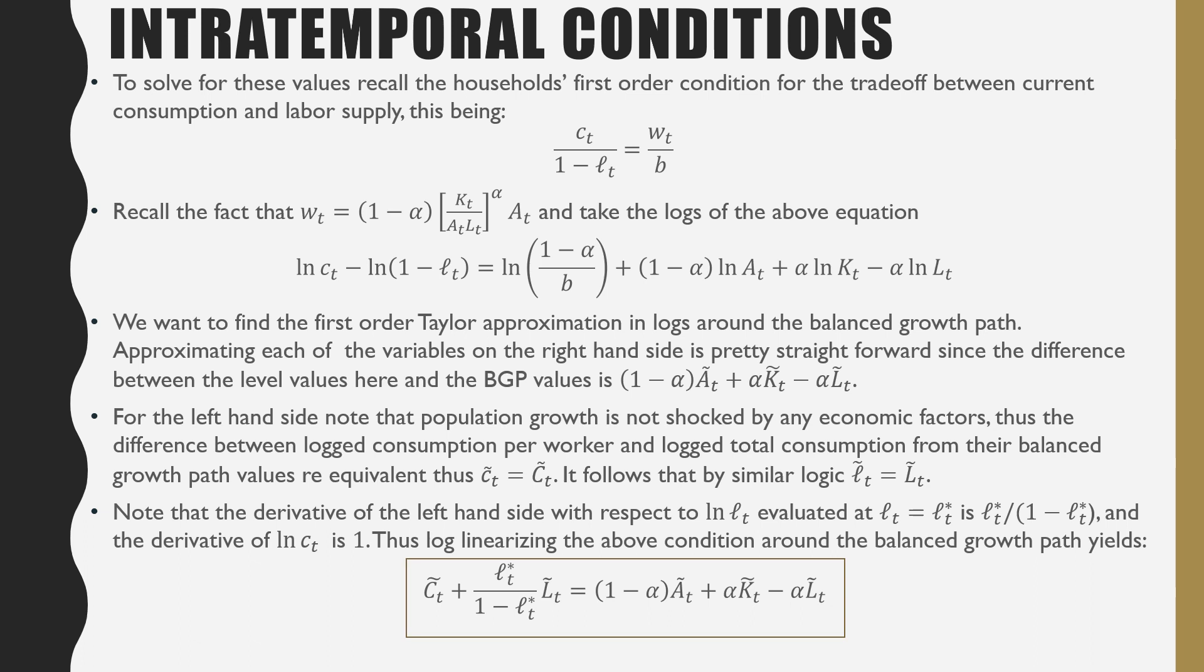We want the first order Taylor approximation around the balanced growth path. Approximating each of these variables on the right-hand side is pretty straightforward since the difference between the level values and the BGP values is just 1 minus alpha times A tilde plus alpha K tilde minus alpha L tilde.